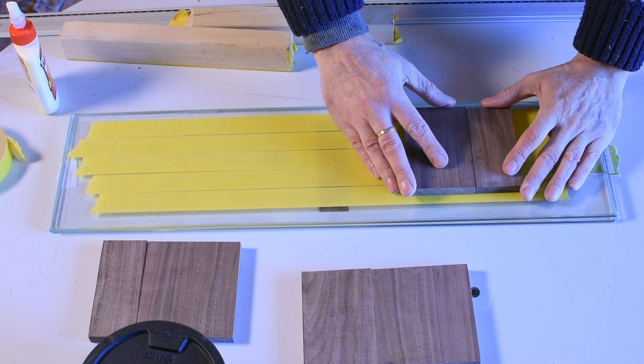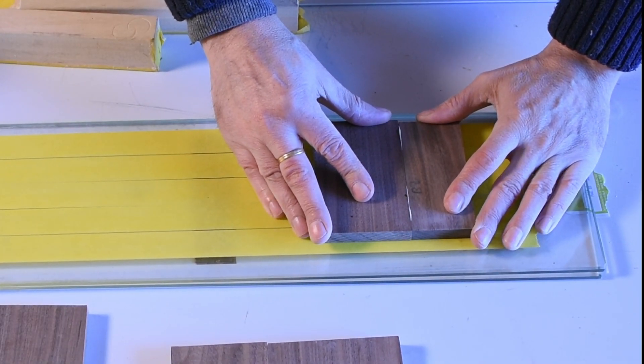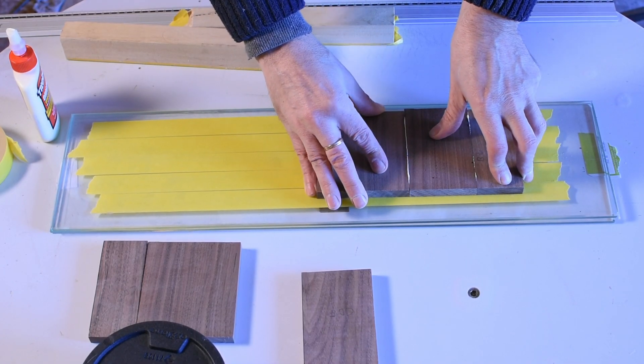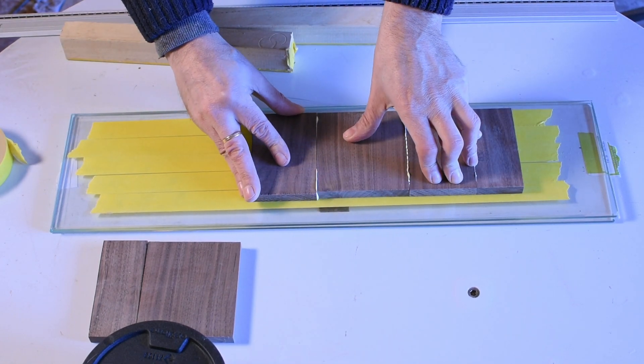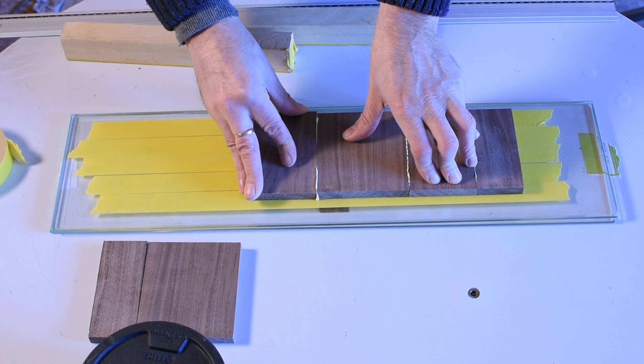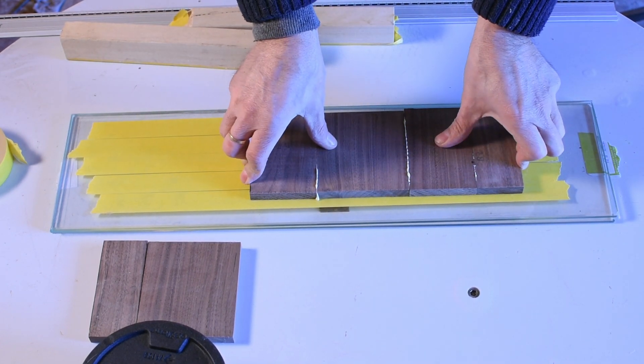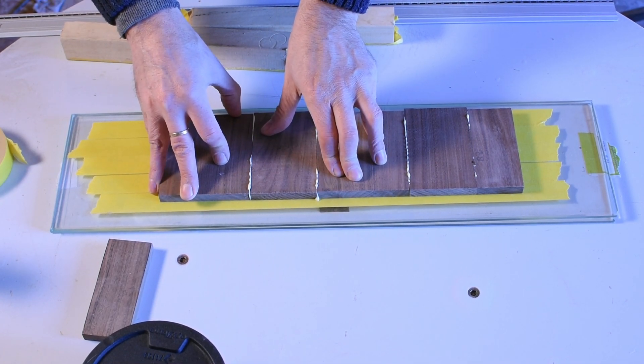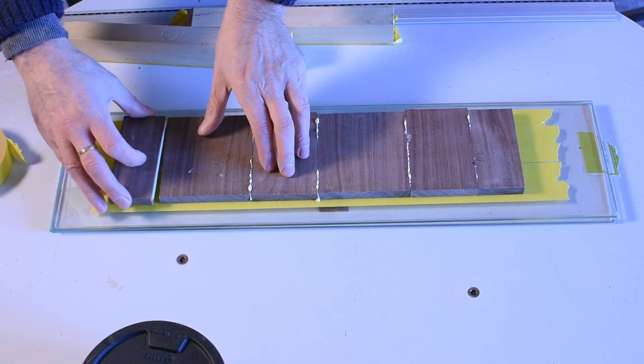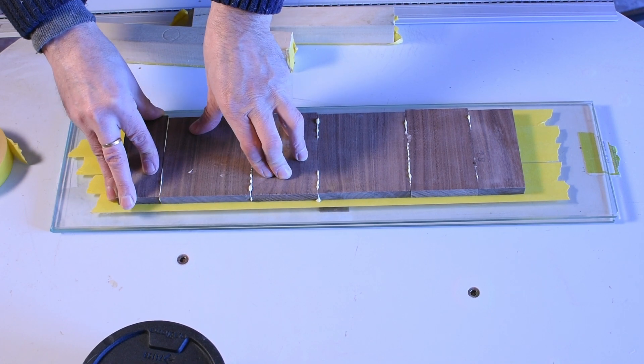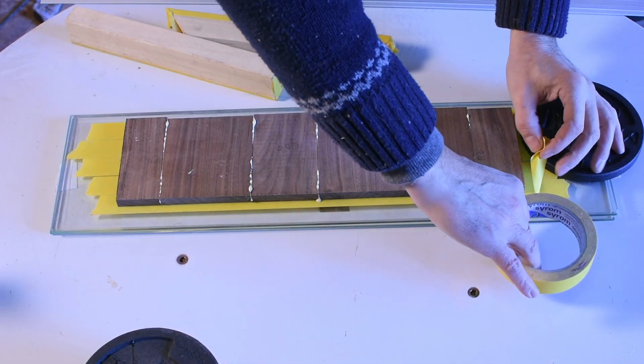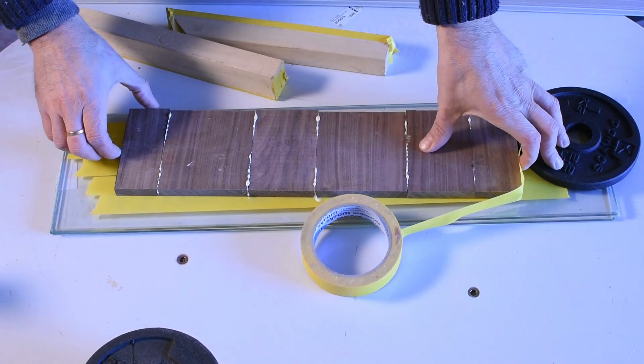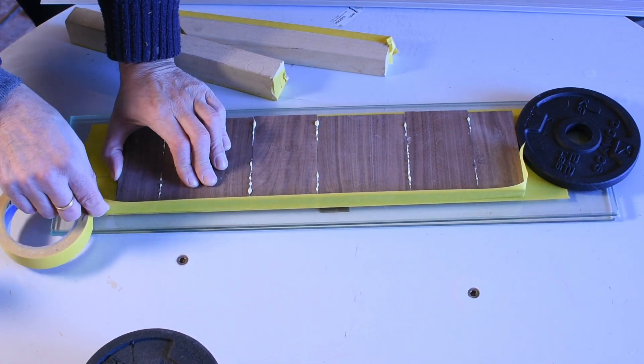I proceed with the gluing. It is essential to lean on a perfectly flat surface. I used two glass shelves. Clamping is not essential. The pressure on a well-pulled paper tape is enough.